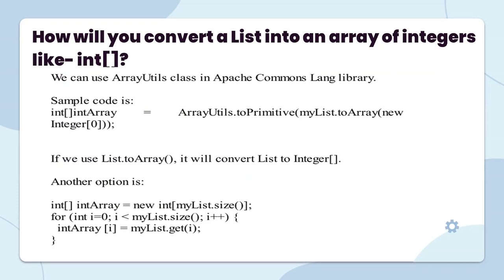How will you convert a list into an array of integers like int[]? We can use the ArrayUtils class in the Apache Commons library. If we use list.toArray(), it will convert the list to an Integer array.